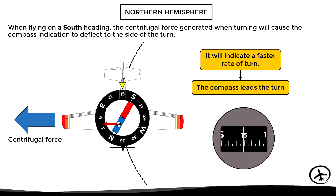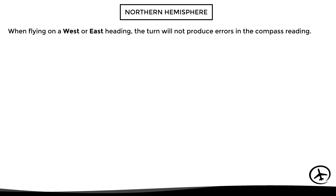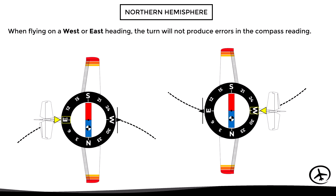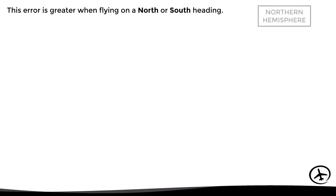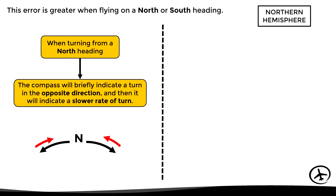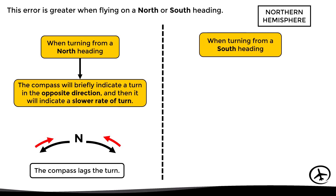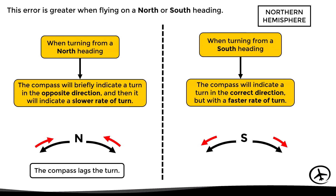When flying on a west or east heading, the centrifugal force generated during the turn will not affect the compass indication, since the center of gravity, pivot point, and centrifugal force are aligned, so the magnet has no tendency to rotate to either side. In summary, this effect is greatest when flying on a north or south heading. In the northern hemisphere, turning from a north heading causes the compass to lag the turn, while turning from a south heading causes the compass to lead the turn.